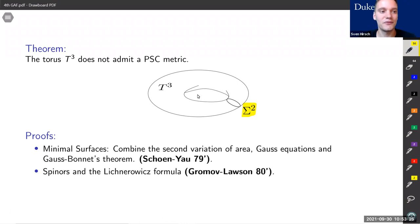Then there's also another proof by Gromov and Lawson using spinors and the Lichnerowicz formula. Basically both of these proof techniques—minimal surfaces and spinors—have been the dominant techniques when studying scalar curvature for the last four decades.